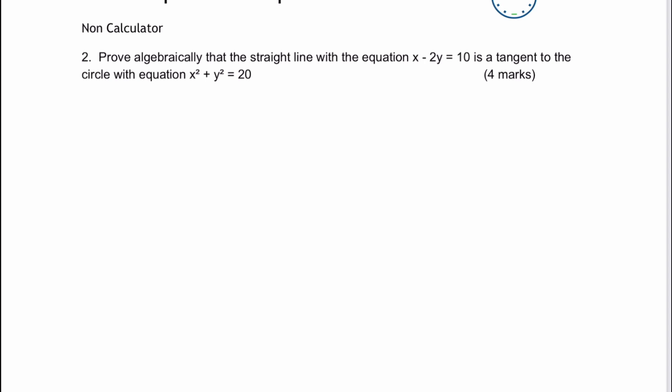So here we are at question number two, and it says prove algebraically the straight line with that equation is a tangent to the circle with that equation. Now, one of the things about the equation of a circle is that the value of 20 is actually the value of the radius squared. So therefore, the radius of this particular circle is going to be equal to the square root of 20, which is roughly about four and a half.